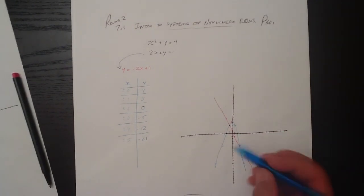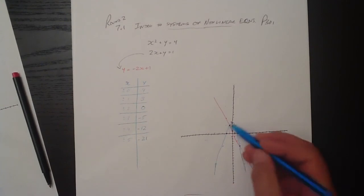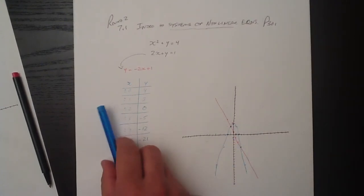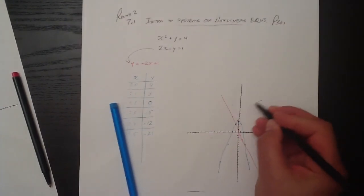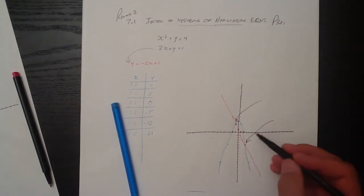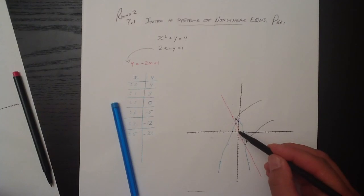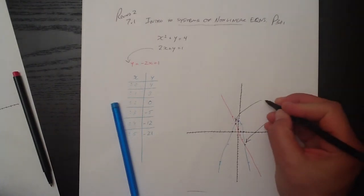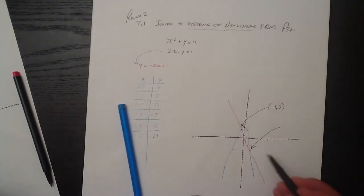But we see here that our parabola intersects a straight line in two places. We have this spot here and we have this spot here. So those two coordinates, which appears to be 1, 2, 3, and negative 1. So negative 1, 3 is one location. And here,